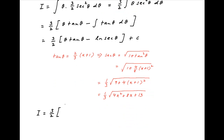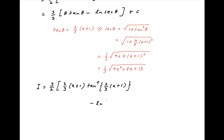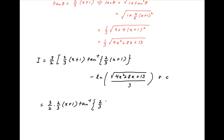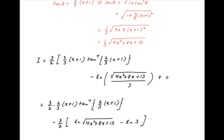Therefore the value of the given integral equals (3/2) times [(2/3)(x plus 1) times tan inverse of (2/3)(x plus 1)] minus ln of (1/3) times square root of (4x squared plus 8x plus 13), plus the constant of integration. This simplifies to (x plus 1) times tan inverse of (2/3)(x plus 1) minus (3/2) times [ln of square root of (4x squared plus 8x plus 13) minus ln 3], plus the constant of integration.